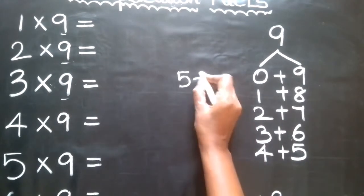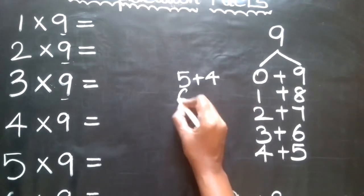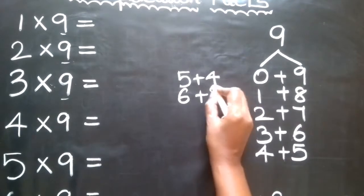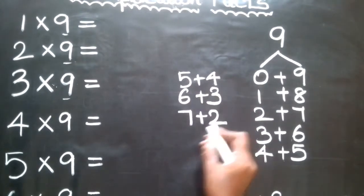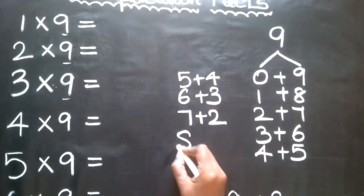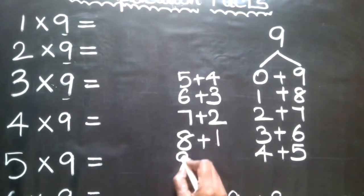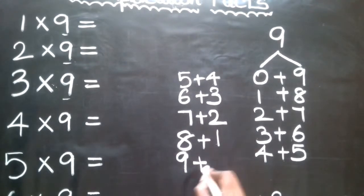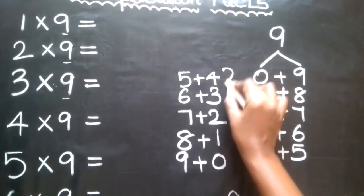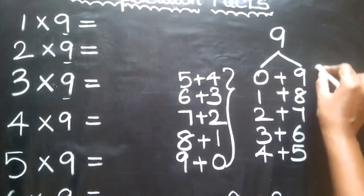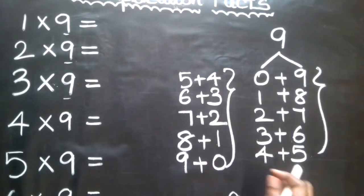Now reverse learning: 5 plus 4 is 9; 6 plus 3 is 9; 7 plus 2 is 9; 8 plus 1 is 9; 9 plus 0 is 9. This step shows just digits and their reverse.